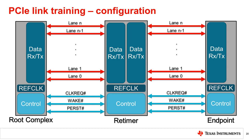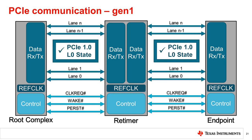After determining link and lane numbers, the PCIe link can move into a number of states, but for this example it will move into what is called the L0 state, which is the normal operational state where data and packets are sent and received. Once we have reached L0, the root complex and endpoint can successfully communicate between each other.